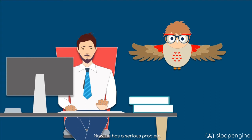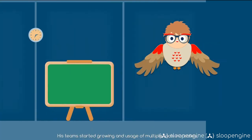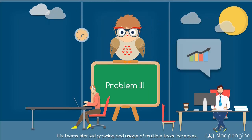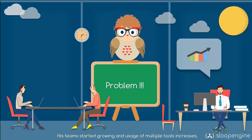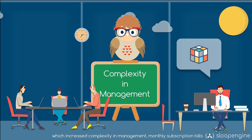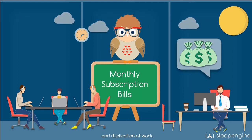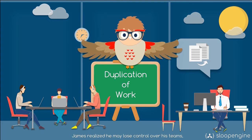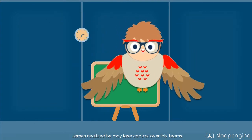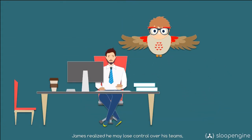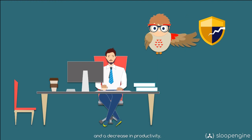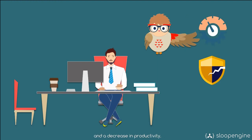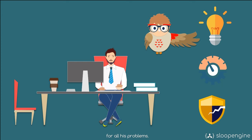Now, he has a serious problem. His teams started growing, and usage of multiple tools increases, which increased complexity in management, monthly subscription bills, and duplication of work. James realized he may lose control over his teams, which might lead to security risks and a decrease in productivity. He is badly in need of a one-stop solution for all his problems.